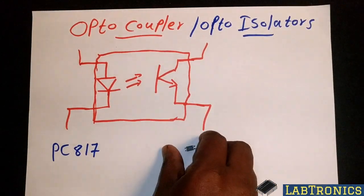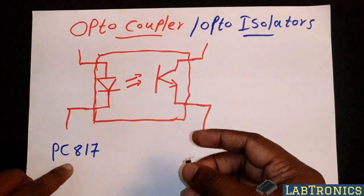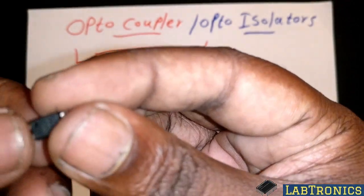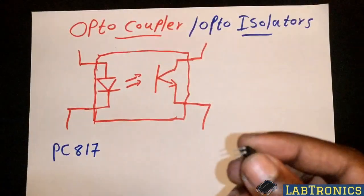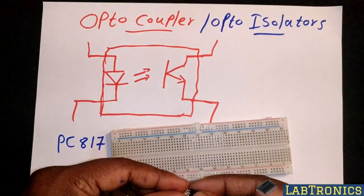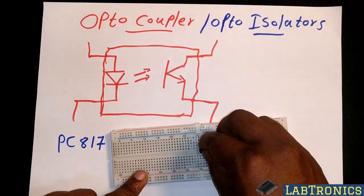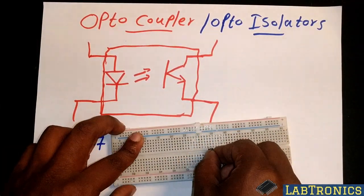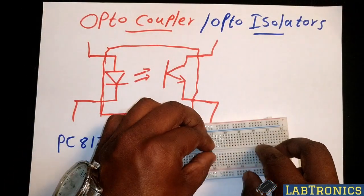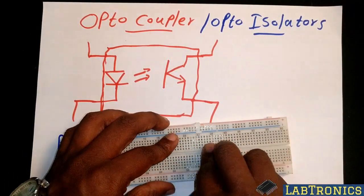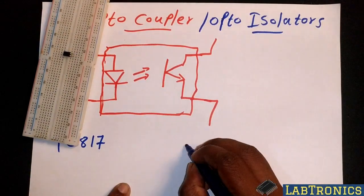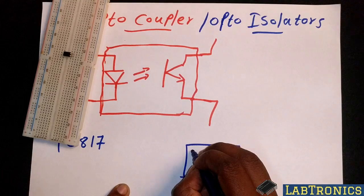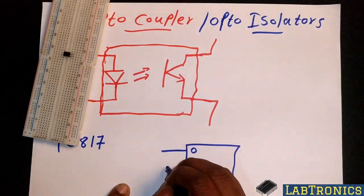We're going to use the PC817 optocoupler. I'm going to show you the breadboard setup. We have the component and proper connectors. You need to refer to the datasheet to get the proper values and minimum specifications for the pins.